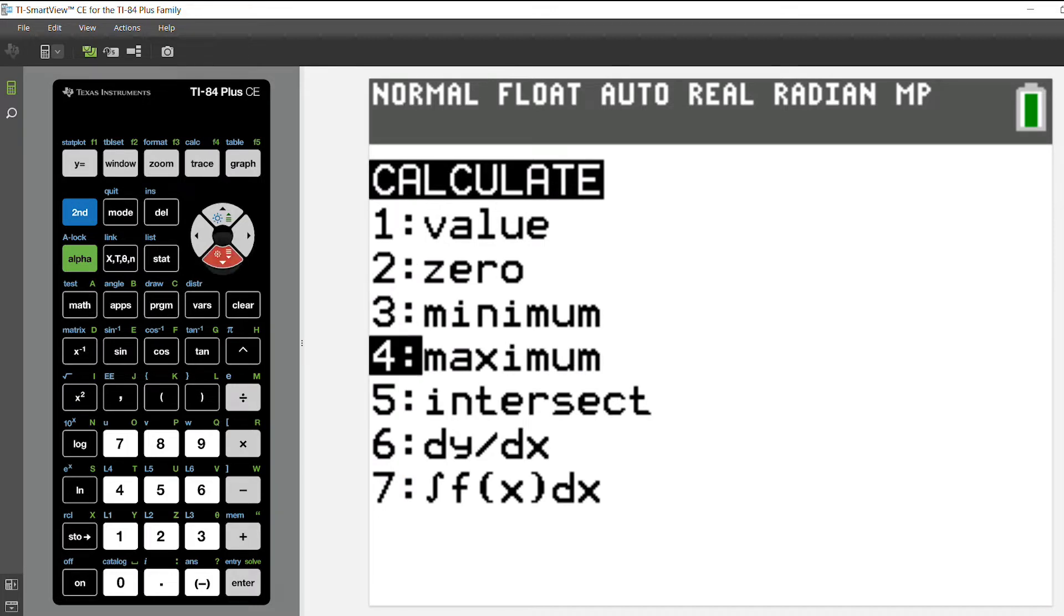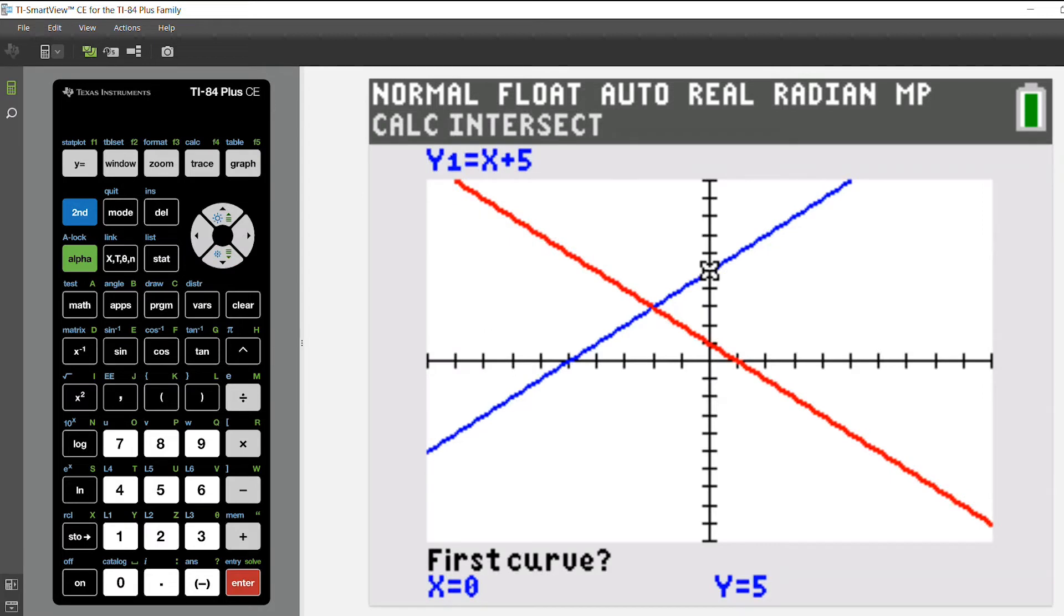Arrow down or just insert 5 so that you can see intersect. Hit enter. Choose your first curve and your second curve.